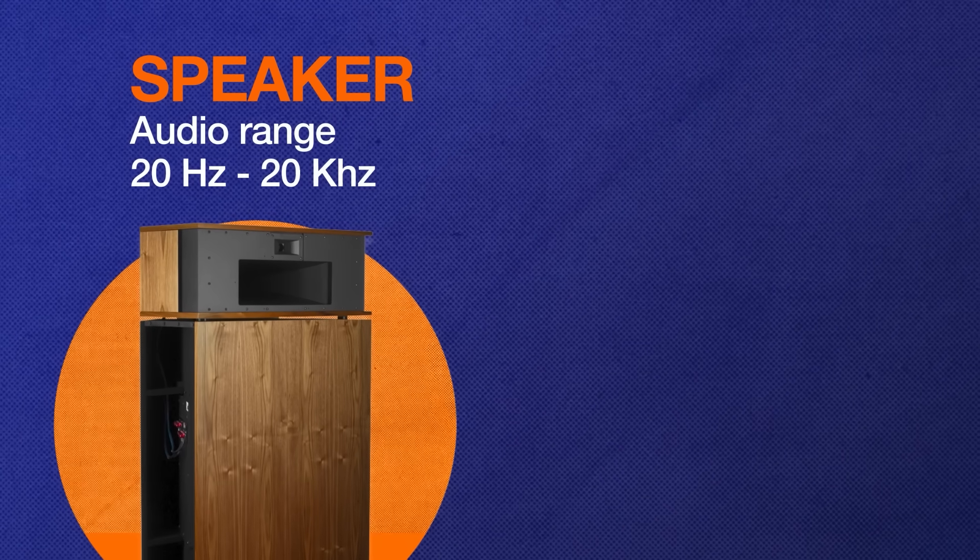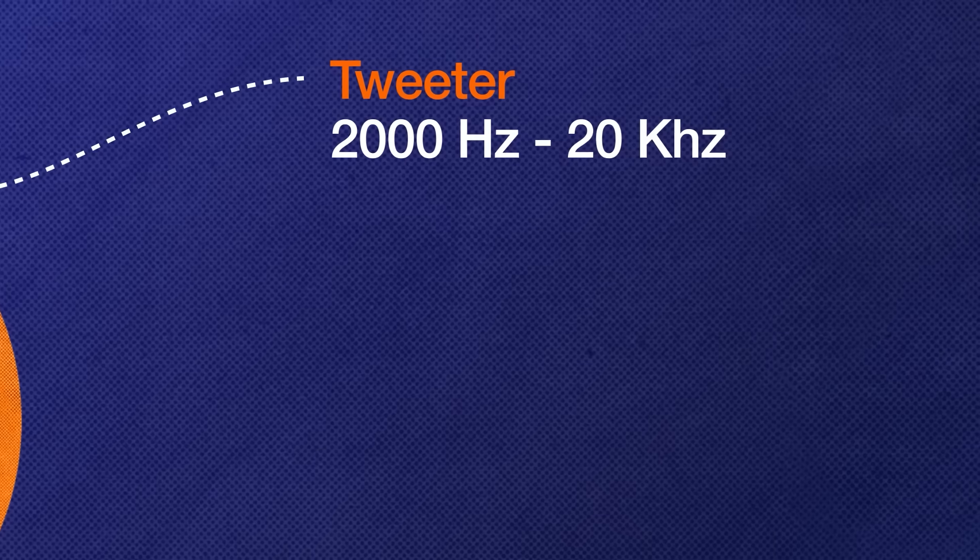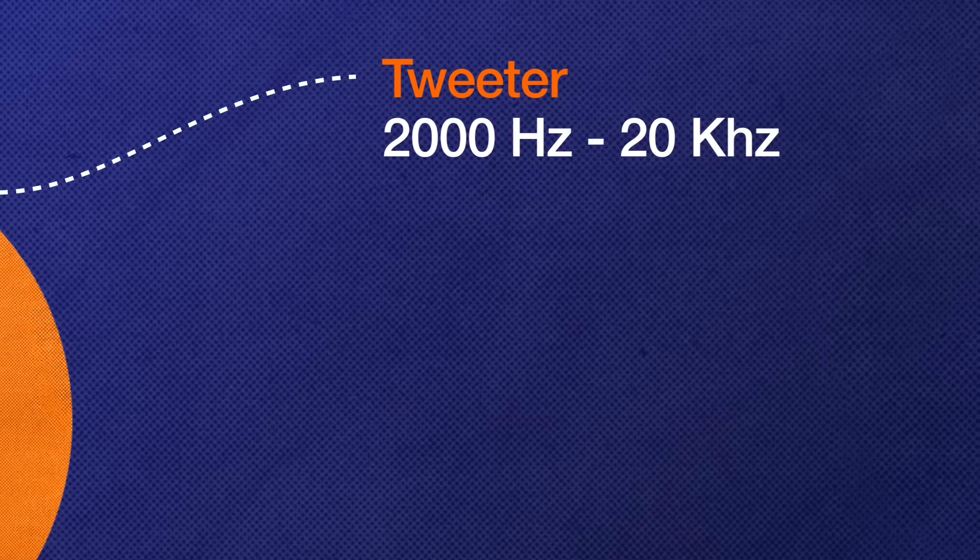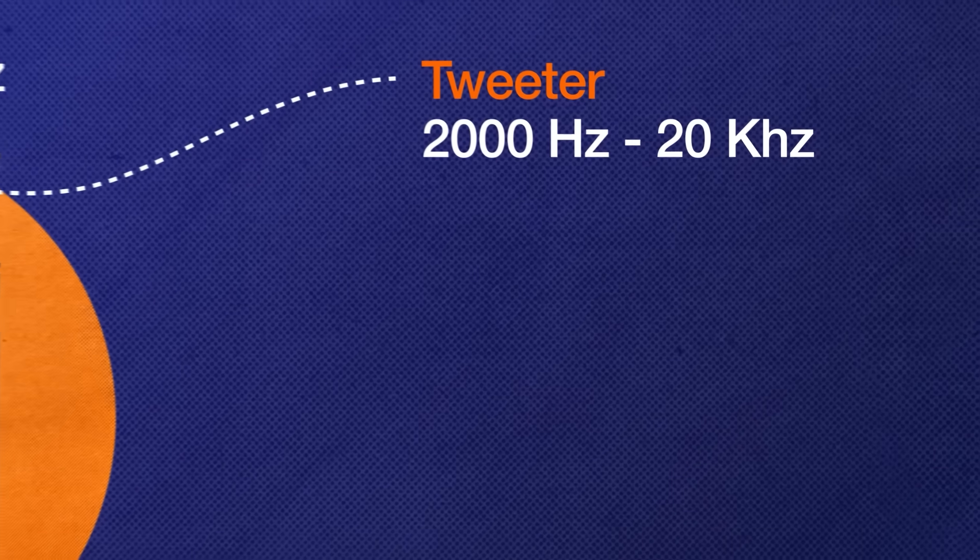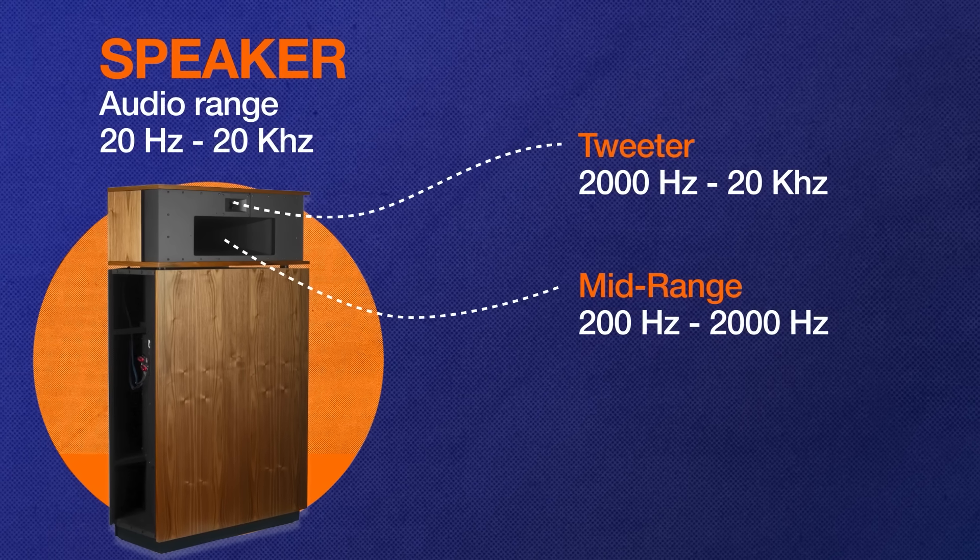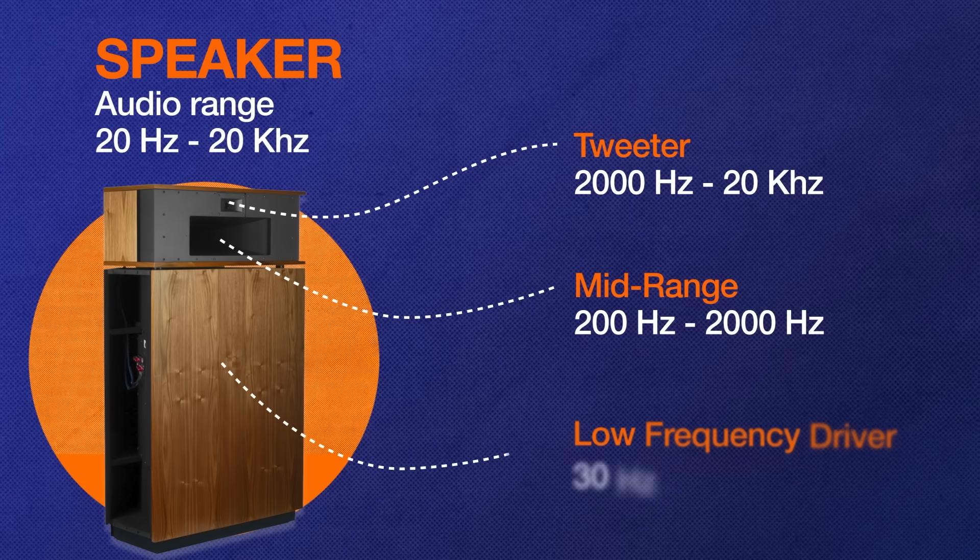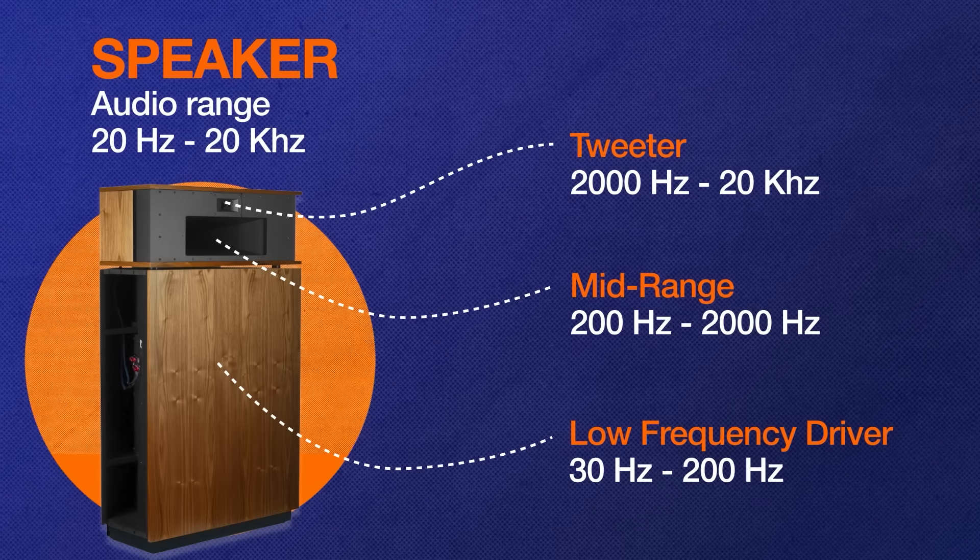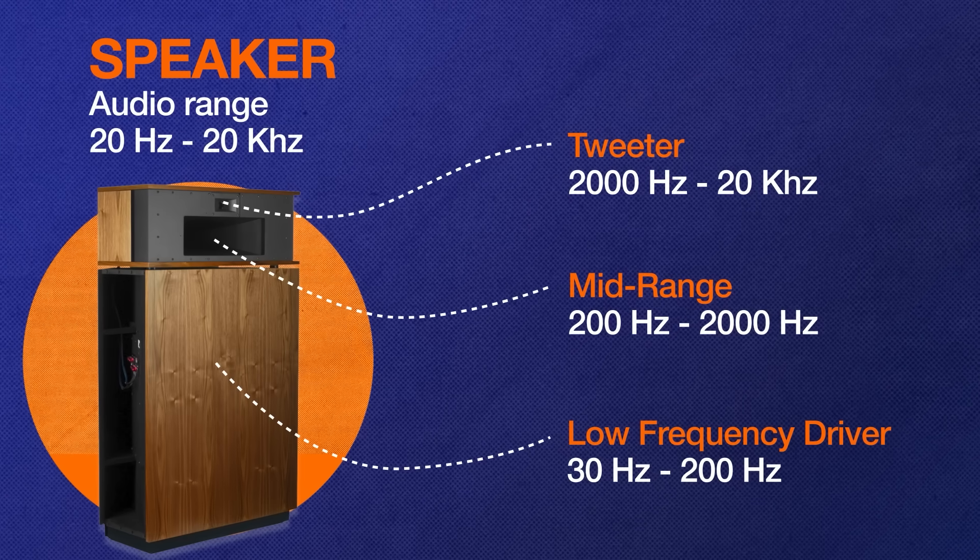So I just mentioned a three-way speaker has two crossovers but what is a crossover? Imagine the speaker is taking in the entire audio range from 20 hertz to 20 kilohertz. Your tweeter reproduces frequencies from 2000 hertz to 20 kilohertz. Your mid range reproduces frequencies from 200 hertz to 2000 hertz and your low frequency driver reproduces frequencies from 30 hertz to 200 hertz.